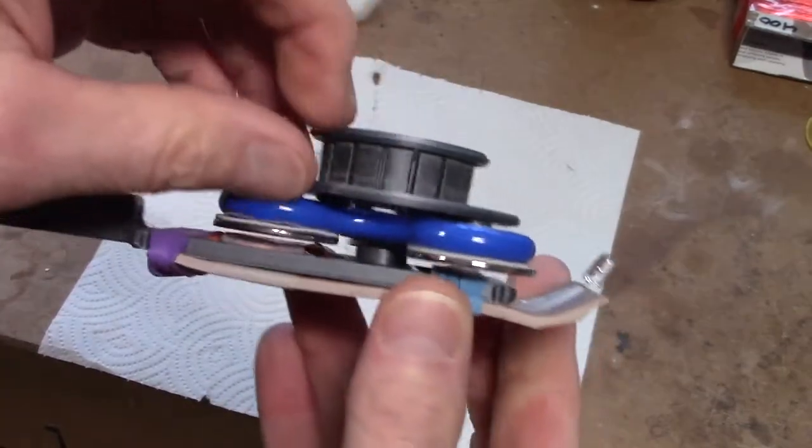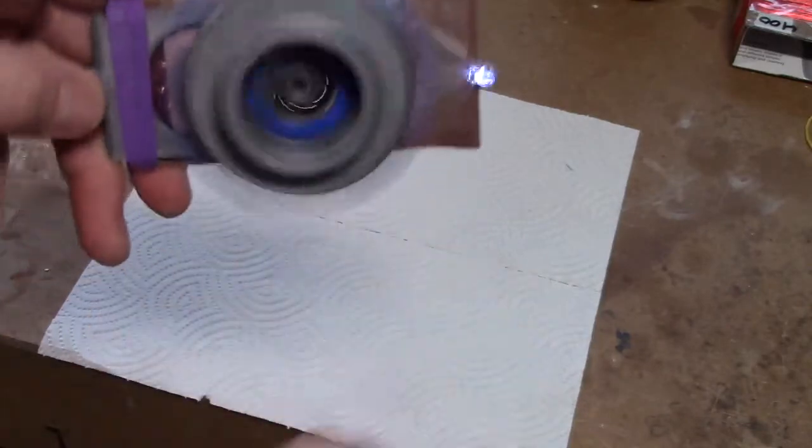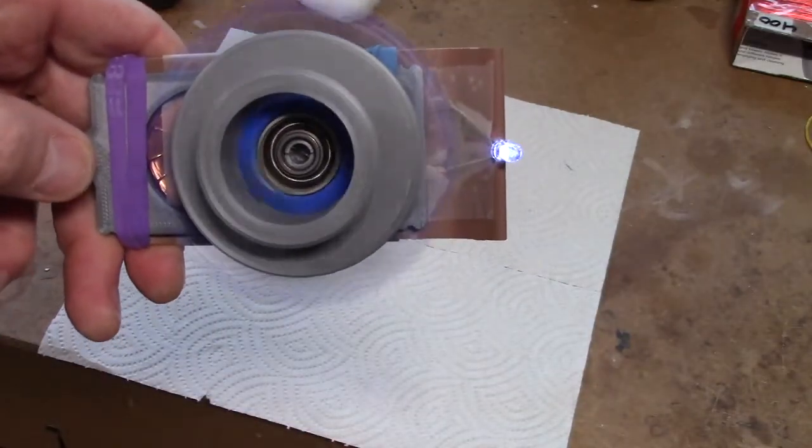you can see then you've got pretty good clearance. This will spin, but it comes pretty close to the light. And we can spin it and hold it and make it go.